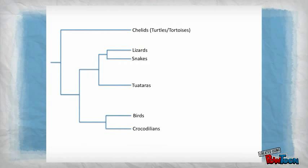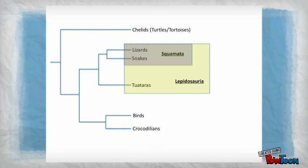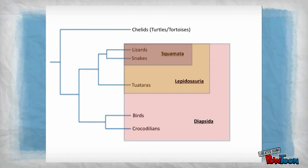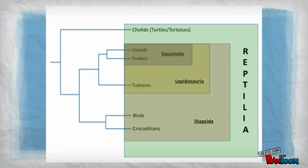Lizards and snakes make up the group Squamata. They, along with Tuataras, make up the group called Lepidosauria. Archosaurs, which includes birds and crocodilians, along with Lepidosaurs, make up the group Diapsida. Diapsids, along with the Anapsid group of turtles and tortoises, finally make up the group Reptilia.